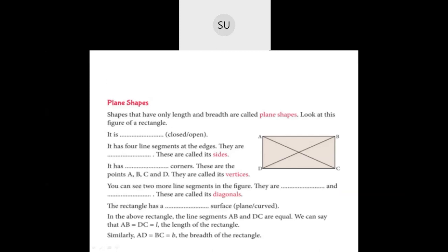Shapes that have only length and breadth are called plain shapes. A rectangle is a closed plain figure. It has four line segments as edges. Looking at rectangle ABCD, the line segments AB, BC, CD, and DA are the sides. The corners A, B, C, D are called vertices.